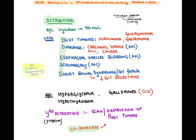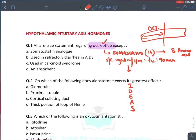Octreotide is the drug of choice for bleeding esophageal varices leading to hematemesis, and the drug of choice for acromegaly because it suppresses growth hormone production from the anterior pituitary. It is also used in short bowel syndrome to reduce GIT secretions. Side effects include hyperglycemia (due to insulin suppression), gallstones (by inhibiting cholecystokinin, reducing gallbladder motility), and hypothyroidism. A radioactive isotope of octreotide, Yttrium-90, is used for scanning and destruction of islet cell tumors. A newer modification is lutathera.